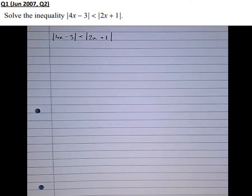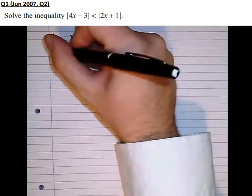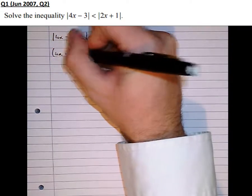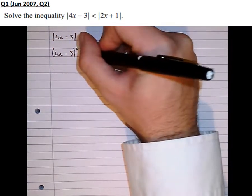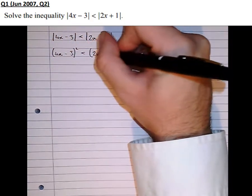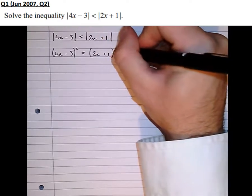Well to guarantee something to be positive, we can square it. In fact that works in this case, we can square both sides. So 4x minus 3 squared is less than 2x plus 1 squared.